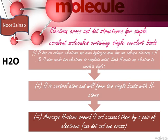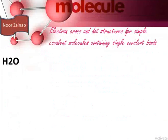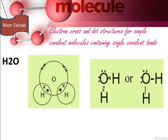For electron dot and cross structures of simple covalent molecules — for example, in H₂O, each oxygen atom has six valence electrons and each hydrogen atom has one valence electron. Oxygen needs two electrons to complete its octet and each hydrogen needs one electron to complete its duplet. Oxygen is the central atom and forms two single bonds with hydrogen. In the diagram of water molecule, the electrons of oxygen are shown by crosses and the electrons of hydrogen by dots, with covalent bonds shown by dashes.